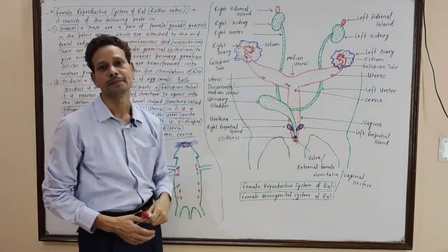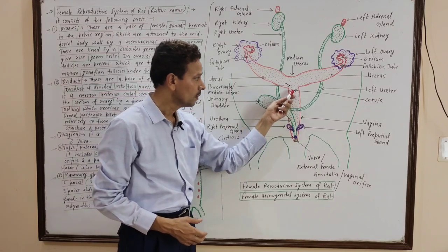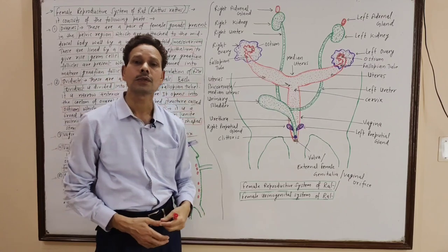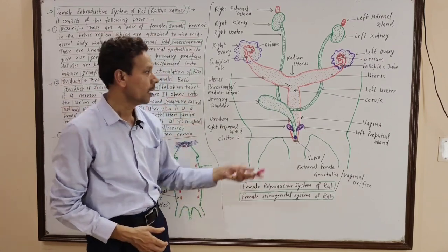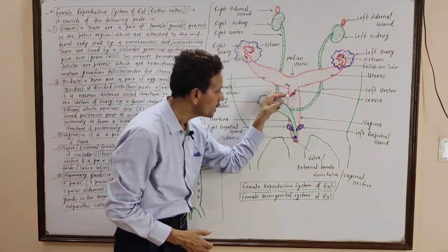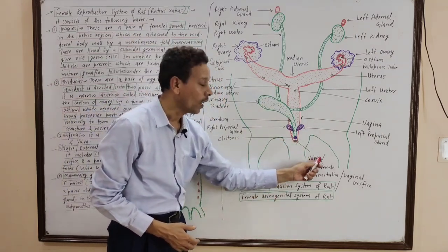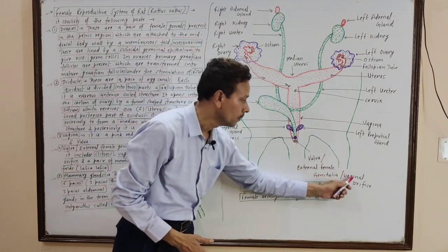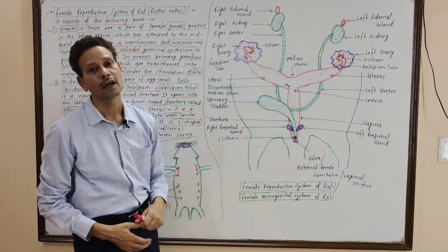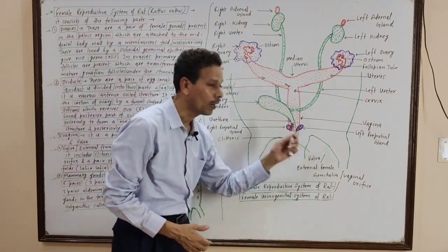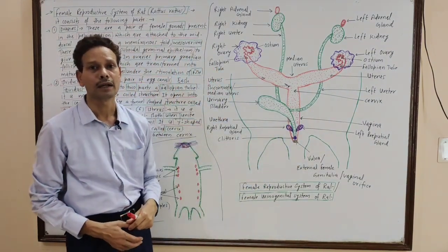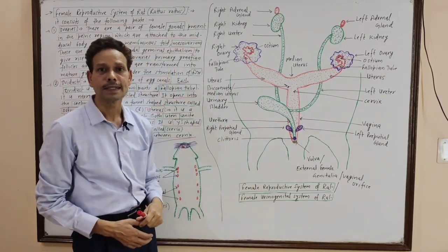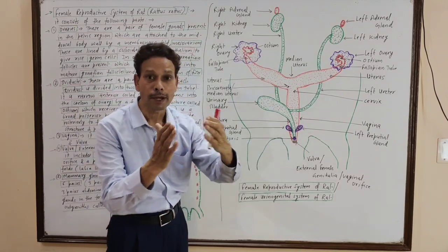Vagina: this is a pinkish-red canal which is highly vascular and glandular in structure. The vagina lies between the cervix and the vulva. The vulva is the external female genitalia, or the opening of the vagina. The vulva includes the clitoris and a pair of membranous folds.